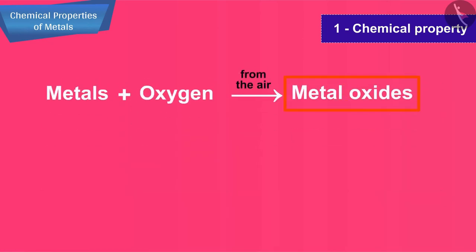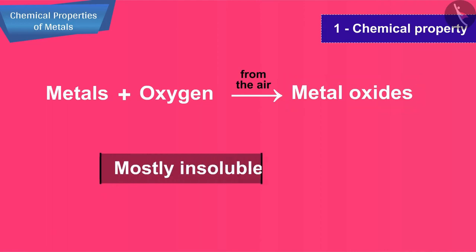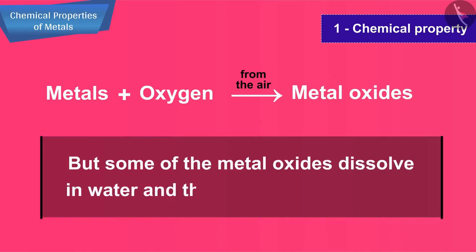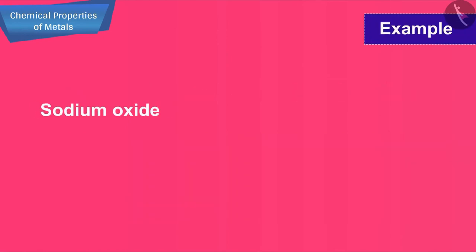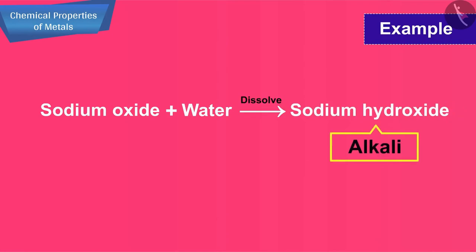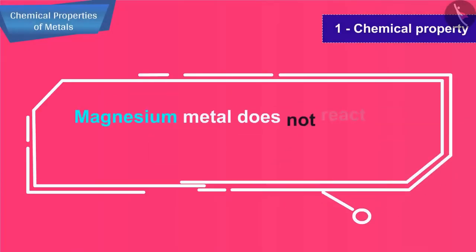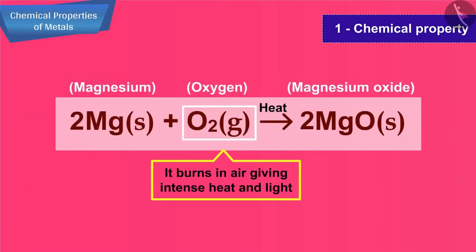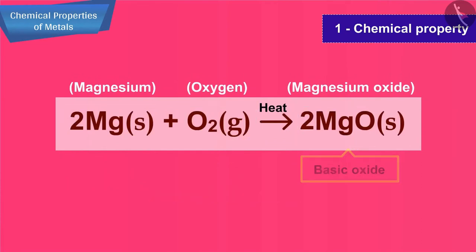The metal oxides formed in these reactions are mostly insoluble in water. But some of the metal oxides dissolve in water and they are known as alkalies. Sodium oxide is soluble in water and dissolves in water to produce sodium hydroxide, which is an alkali. Magnesium metal does not react with oxygen at room temperature. But on heating, it burns in air giving intense heat and light to form a basic oxide called magnesium oxide, which is a white powder.